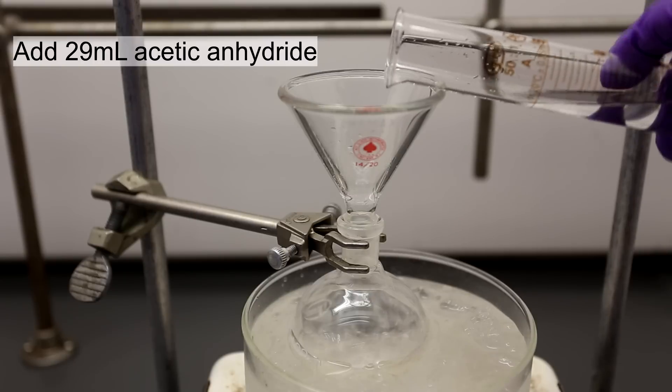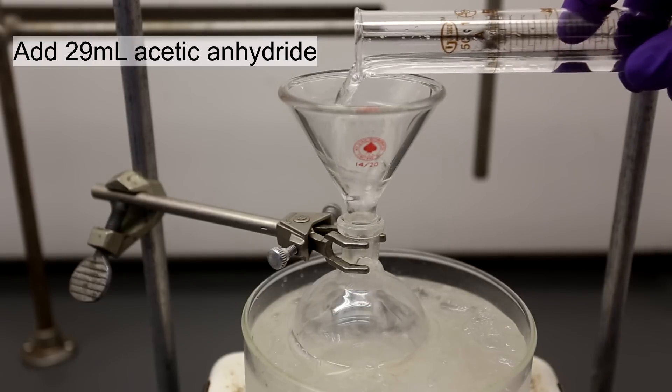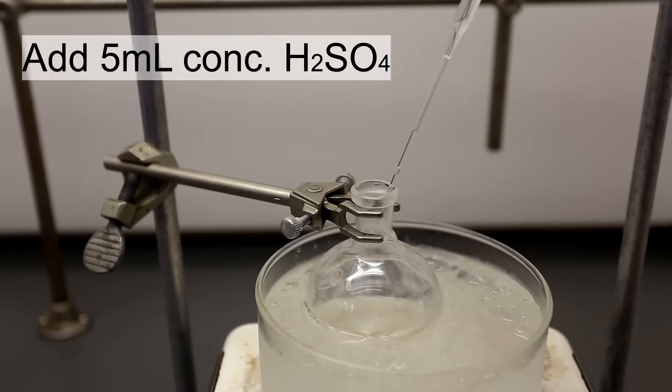First, add 29ml of acetic anhydride to an iced round bottom flask. Next, add 5ml of concentrated sulfuric acid slowly and dropwise.